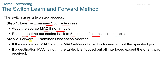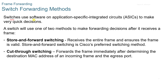Step 2 is the forwarding process: the switch examines the destination address. If the destination MAC is in the MAC table, the frame is forwarded out the specific port. If the destination MAC is not in the table, the frame is flooded out on all interfaces except the one it was received on. Switches use software on application-specific integrated circuits, or ASICs, to make quick decisions.